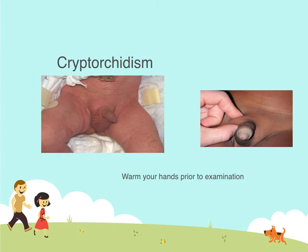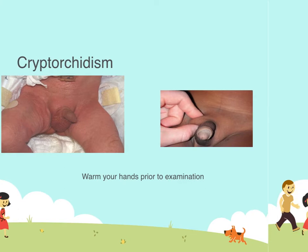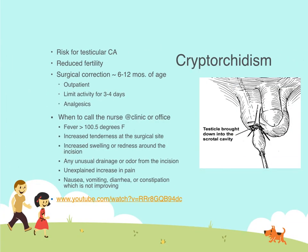The next problem we encounter is cryptorchidism — a testicle that is not descended. Make sure you warm your hands before examining the child because cold hands will cause the scrotum to retract and you won't be able to palpate it. You can see in the picture that the testicles aren't fully in the scrotum, but at least they're not in the abdomen. The problem with cryptorchidism is the longer they stay in the abdomen with that increased heat, there's an increased risk of developing testicular cancer as well as infertility when the child is older.